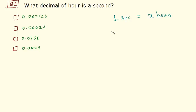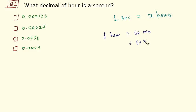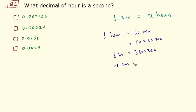So let's first convert hours to seconds. We know that one hour is equal to 60 minutes and one minute is equal to 60 seconds. So naturally 60 minutes would be 60 times 60 seconds. Therefore, one hour is equal to 3600 seconds. And we want how many hours is equal to one second.